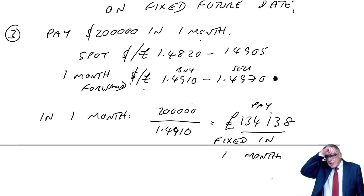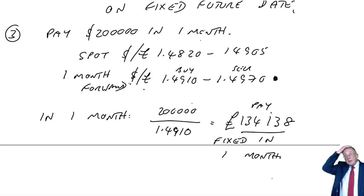We've agreed to that today. Therefore in a month's time we have to convert. This is fixed in one month. So there's now no risk. The actual spot in a month may be better, may be worse, it's irrelevant. But we have to use this rate we've agreed, 1.4910. So there's no risk.